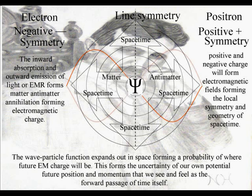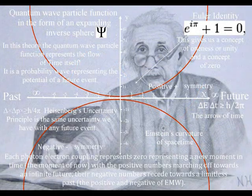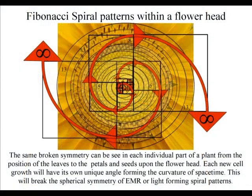This is exactly the process that is explained in a new theory called quantum atom theory. In this theory we have a process of spherical symmetry forming and breaking, that forms the curvature of spacetime in Einstein's relativity and the spiral of life.